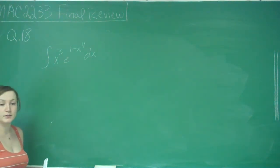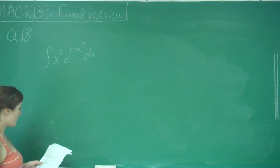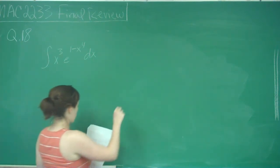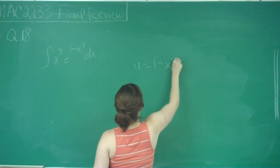We're going to have to use u-substitution here. We'll say that u is equal to 1 minus x to the 4th.